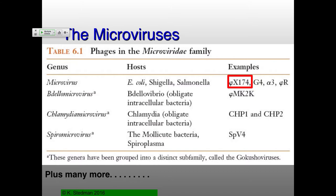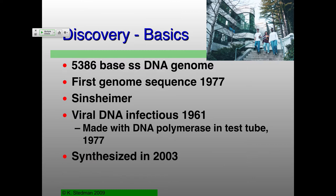The best-studied of these is PhiX174, which infects E. coli. There are a number of other microviruses that infect close relatives of these gram-negatives. But more recently, people have found quite a lot of microviruses that infect things like Bdellovibrio, Chlamydia, and Spiroplasma — bacteria that infect bacteria. So you have a virus infecting a bacterium that's infecting a bacterium — or in the case of Chlamydia, one infecting eukaryotic cells. And many more through metagenomics.